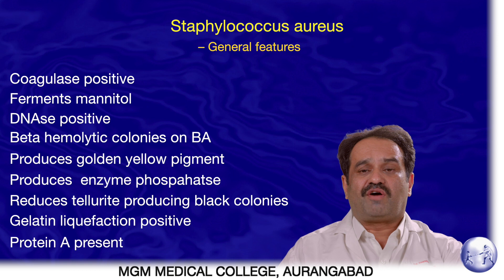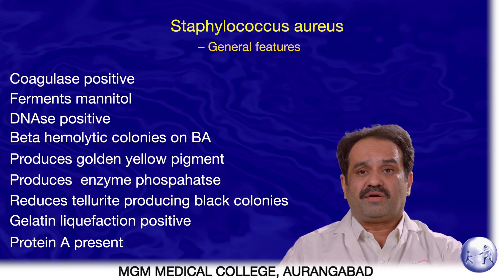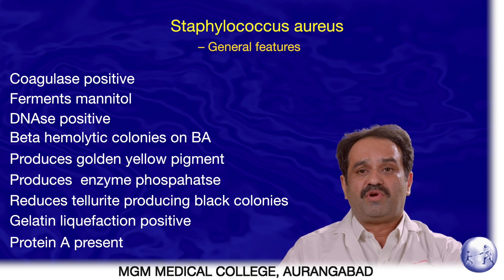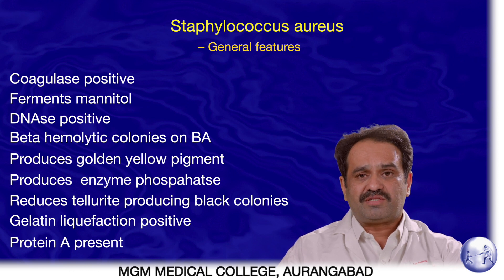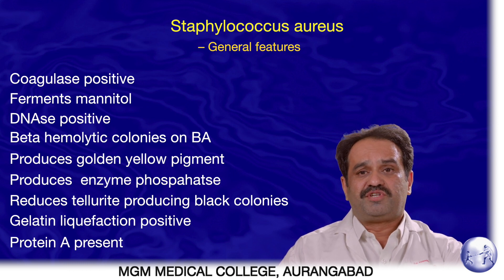The characteristic features helpful in identifying Staphylococcus aureus are: it is coagulase-positive, mannitol-fermenting, DNase test positive, and produces beta-hemolytic colonies on blood agar. It produces golden yellow pigmented colonies, the enzyme phosphatase, reduces tellurite to tellurium, causes liquefaction of gelatin, and protein A can be detected.